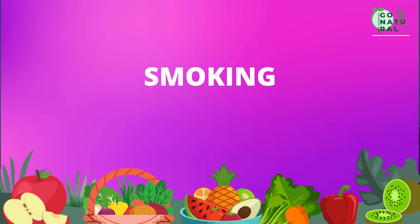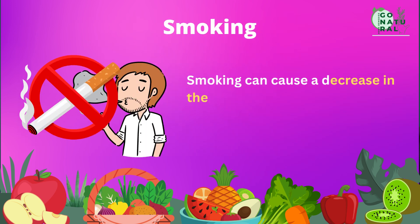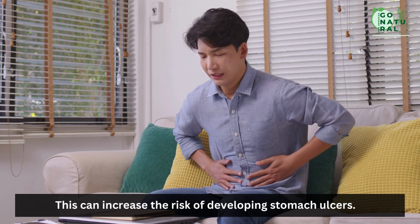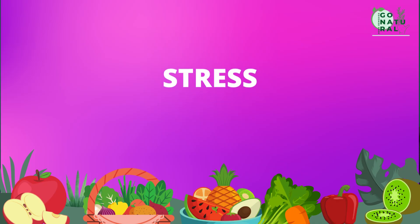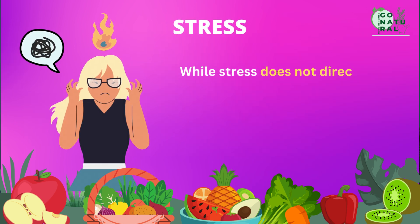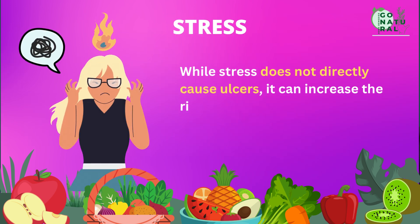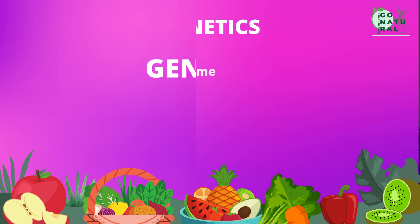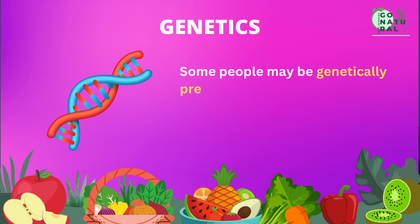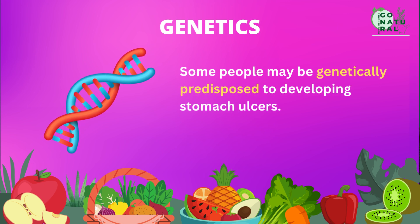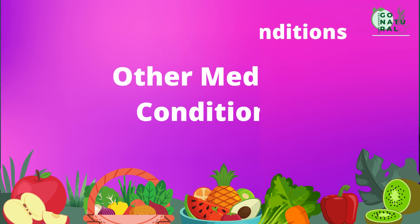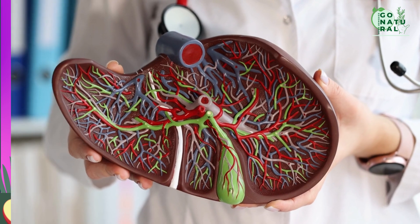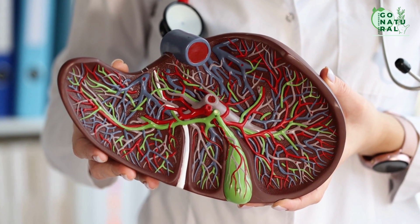Smoking — smoking can cause a decrease in the production of saliva, which neutralizes stomach acid, and this can increase the risk of developing stomach ulcers. Stress — while stress does not directly cause ulcers, it can increase the risk of developing them or exacerbate existing ulcers. Genetics — some people may be genetically predisposed to developing stomach ulcers. Other medical conditions such as Crohn's disease, liver disease, and Zollinger-Ellison syndrome can also increase the risk of developing ulcers.